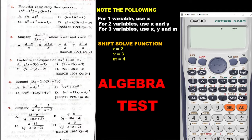Factorize completely the expression: (H squared minus K squared) minus P into bracket (H plus K). Now on the calculator we don't have H, K, or P. These are three different letters. So in place of H we are going to put X, in place of K we will put Y, and in place of P we are going to put M. So instead of H squared minus K squared, we are going to have X squared minus Y squared on the calculator.